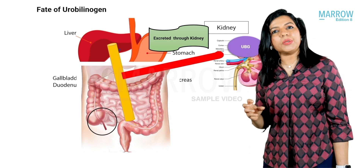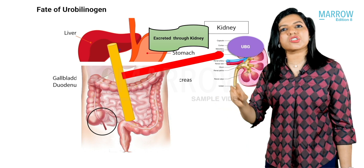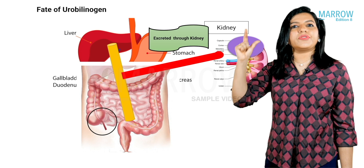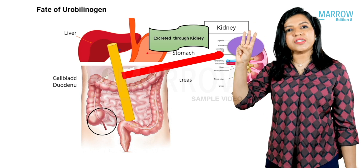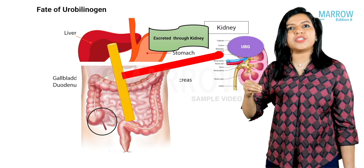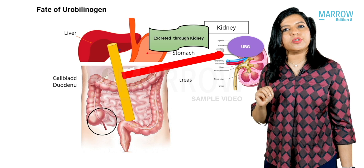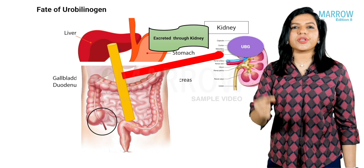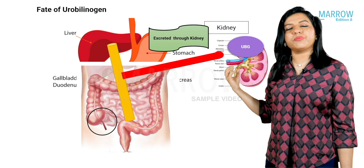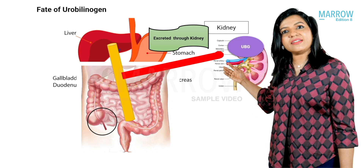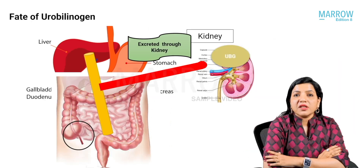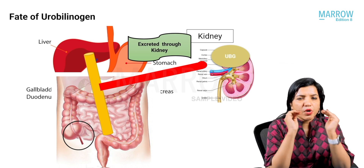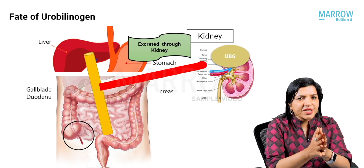In summary, heme catabolism occurs in three organ systems: first, the reticuloendothelial system where bilirubin is formed; second, the liver where bilirubin is conjugated; and third, the intestine where it is deconjugated and converted to urobilinogen. Of that urobilinogen, 80% becomes stercobilinogen, the rest enters enterohepatic circulation, and a minute amount is excreted through the kidney.